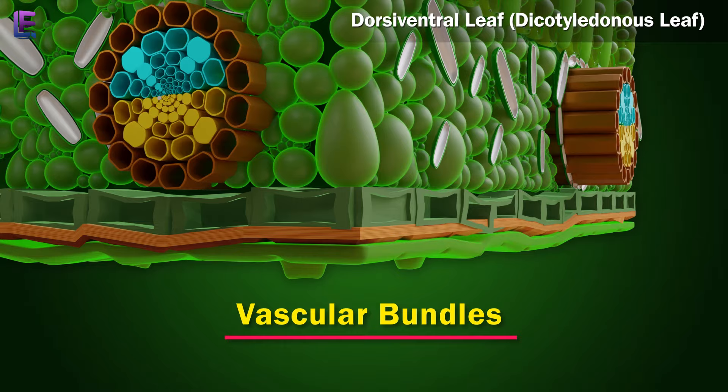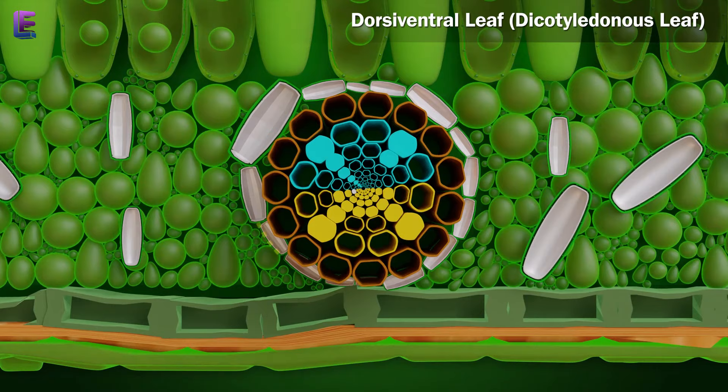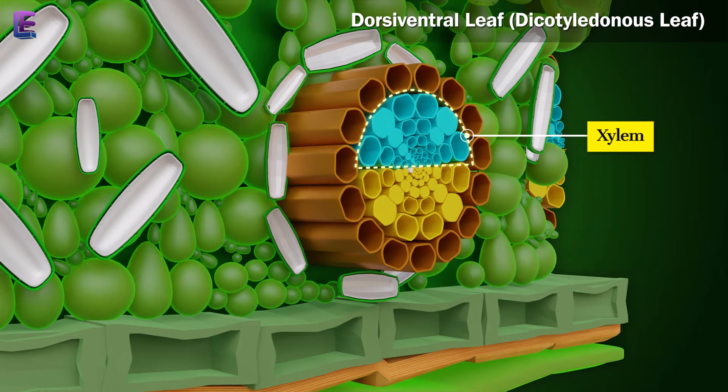3. Vascular Bundles: The vascular bundles in the leaf are arranged in the form of veins and provide strength to the leaf. The vascular bundle is rounded, with xylem towards the upper epidermis and phloem towards the lower. They do not have a wall dividing them.